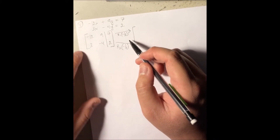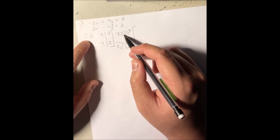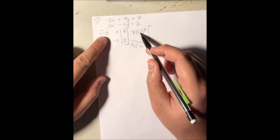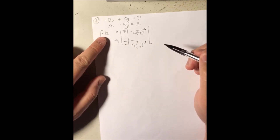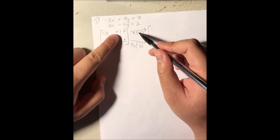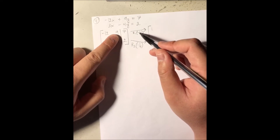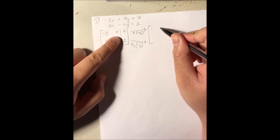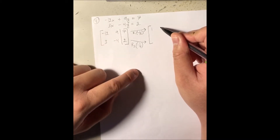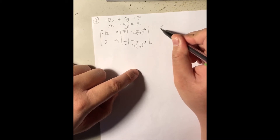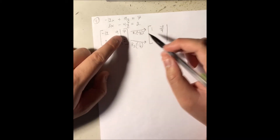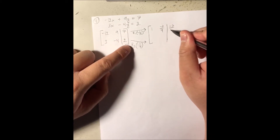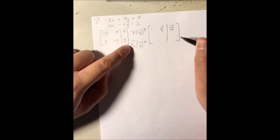For the first row: negative 1 over 12 times negative 12 gives positive 1. Negative 1 over 12 times 9 is negative 9 over 12, which reduces to negative 3 over 4. And negative 1 over 12 times 7 is negative 7 over 12. So that's my new first row.